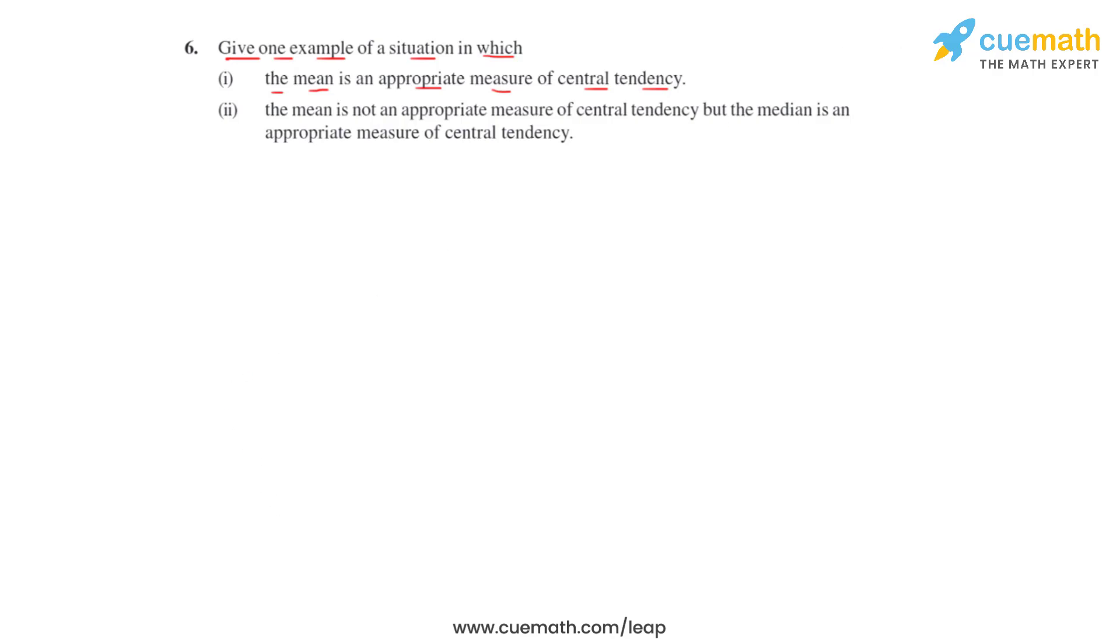So we can take an example and understand this. Let's say we have data which has data points 1, 7, 8, 9, and 9. So in this case we can see that the data point 1 is very far from 7, 8, and 9.